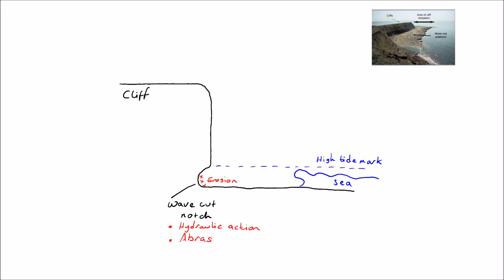The main types of erosion that occur are hydraulic action, which is the force of the sea hitting the base of the cliff, and abrasion, which is throwing little particles against it. As they erode the base of the cliff and form this wave-cut notch, they destabilise the cliff and the cliff wants to slide into the sea. And when the cliff slides into the sea, what occurs is the cliff retreats backwards.